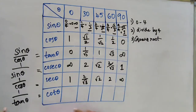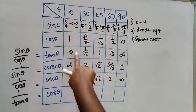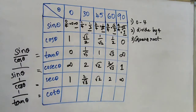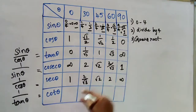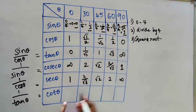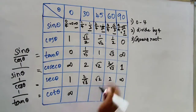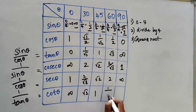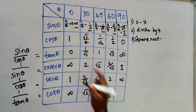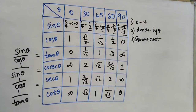Next, cot theta is 1 by tan. The cot table is the tan table written in reverse: cot 0 = infinite, then √3, then 1, then 1/√3, and cot 90 = 0. So this is the trigonometric table. Thank you.